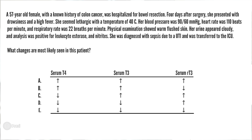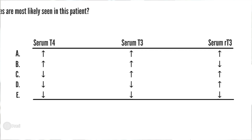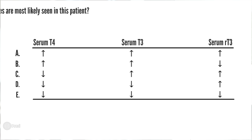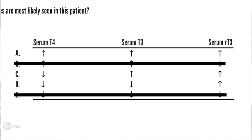Now that you understand the syndrome, let's answer the question. I know most students get intimidated by answers involving arrows like the one seen in this question. It looks confusing, but if you take it step by step, column by column, it should be simple. Or you can go to the column that makes most sense to the case and start eliminating options from there, like we're going to do here. RT3 or reverse T3, as we know, is the first to increase, so we can eliminate B and E already.